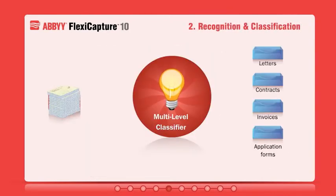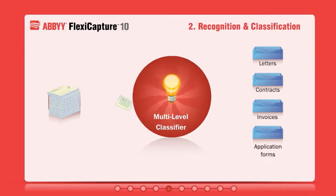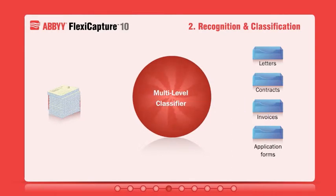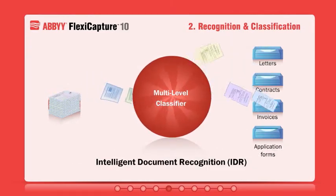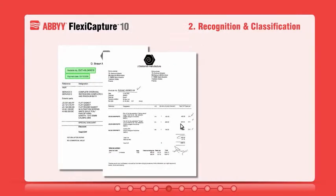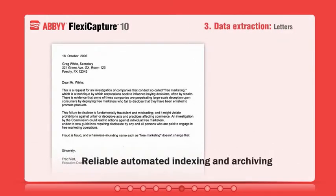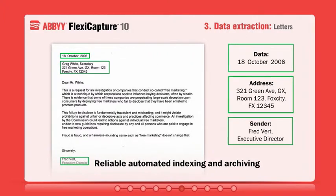ABI FlexiCapture is enriched with intelligent classification and data extraction technologies that are easy to configure and maintain. The system can be easily trained by inputting sample images to help the classifier learn to identify documents and extract data automatically. As a result, FlexiCapture separates the mix of incoming images by document types. The new auto-learning capabilities utilize a simple point-and-click feature to create layout descriptions and define document types for classification. Captured information can be used for automated indexing and archiving.